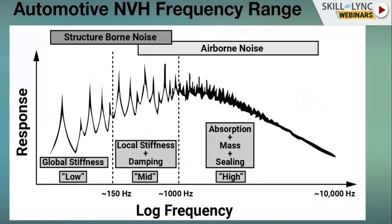Nastran is effective below 1000 Hz. Above 1000 Hz, the SEA (Statistical Energy Analysis) method is used instead. For low frequency analysis, issues are typically solved by addressing global modes or modifying global stiffness. For mid-frequency range problems, solutions involve applying damping patches or modifying local stiffness of the responsible component. For high-frequency or airborne noise, statistical energy analysis is applied.